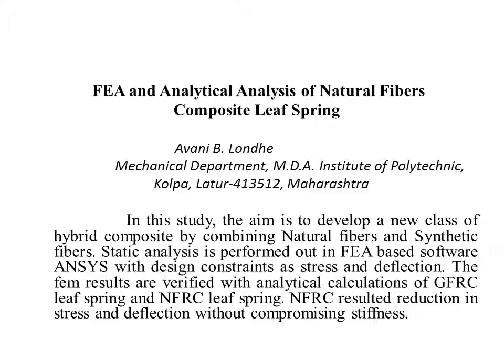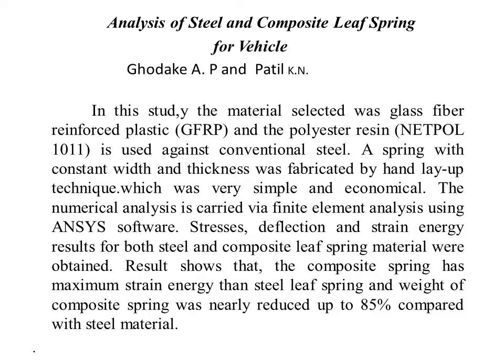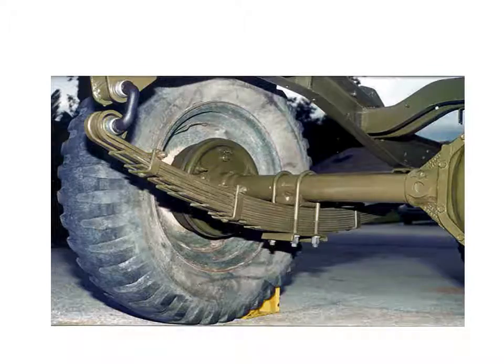Natural fiber reinforced composite resulted in reduction in stress and deflection without compromising stiffness. One more literature survey on analysis of steel and composite leaf springs for vehicles: the material selected was glass fiber reinforced plastic and polyester resin used against conventional steel. A spring with constant width and thickness was fabricated by hand layup technique, which is very simple and economical. The numerical analysis carried out via finite element method used stress and deflection; strain energy results of both steel and composite leaf springs were obtained. Results show the composite spring has maximum strain energy compared to steel and weight was reduced by nearly 80% compared to steel material.